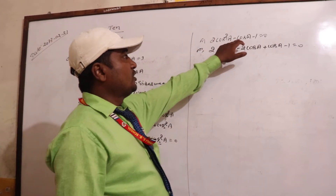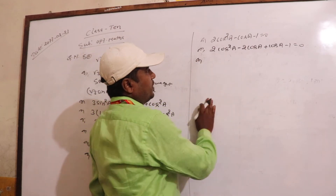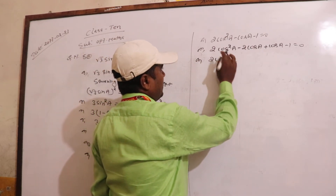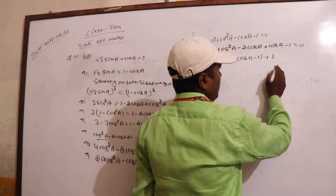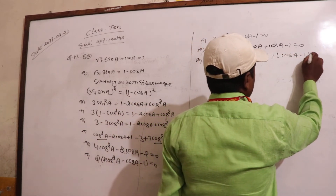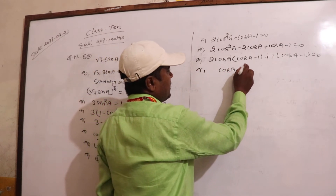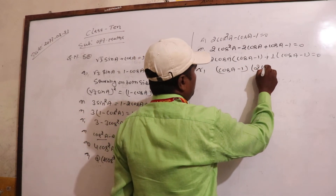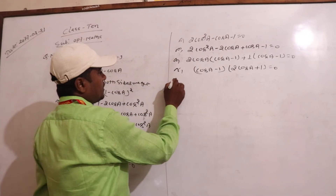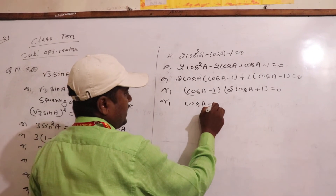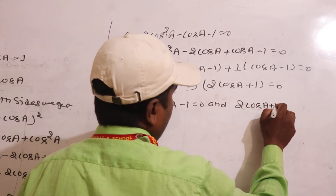First into last equal to zero. So taking common factors: 2 cos A minus 1, then one cos A minus 1 equal to 0. Are these two common? Cos A minus 1 equal to 0. So: 2 cos A minus 1 equal to 0, and 2 cos A plus 1 equal to 0.